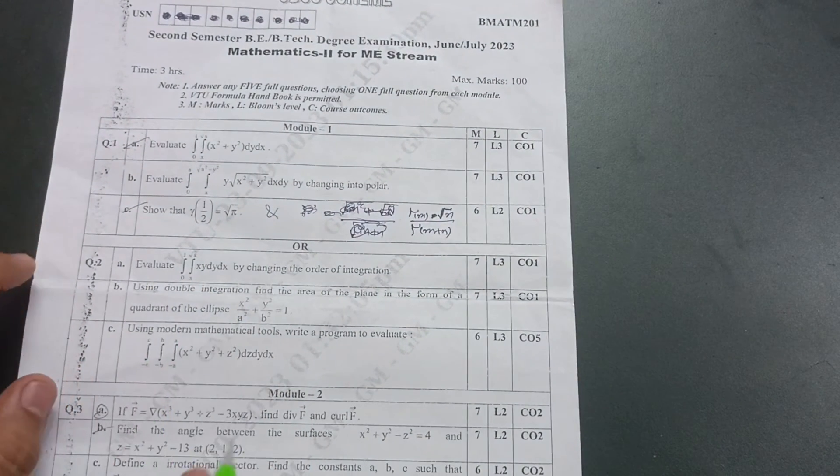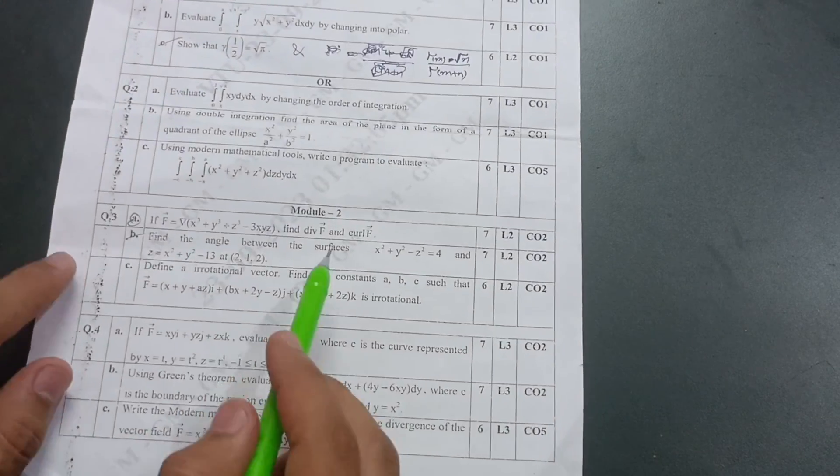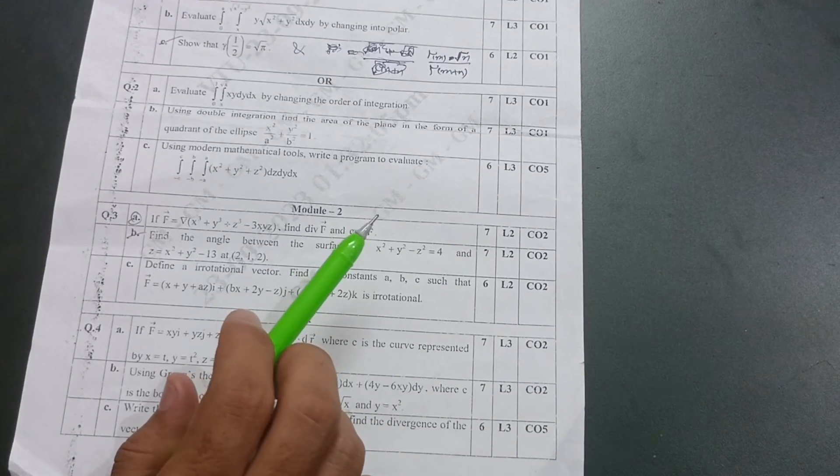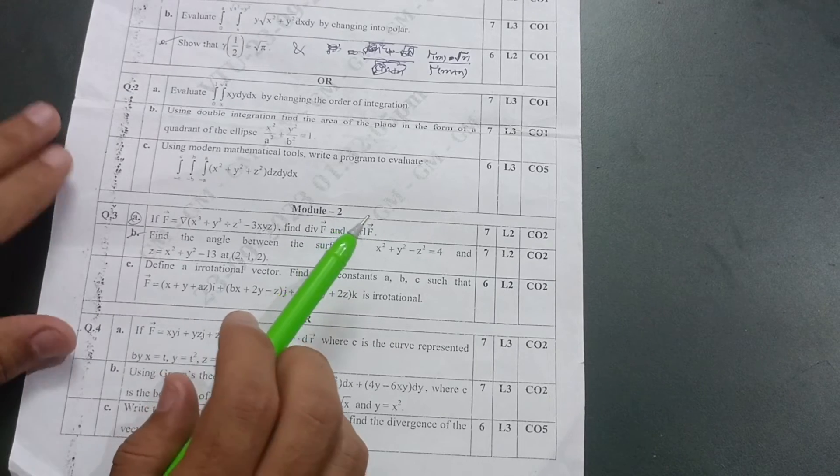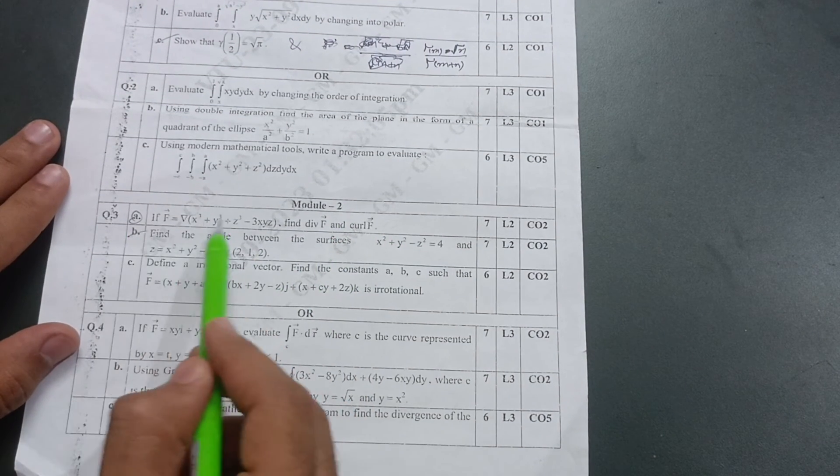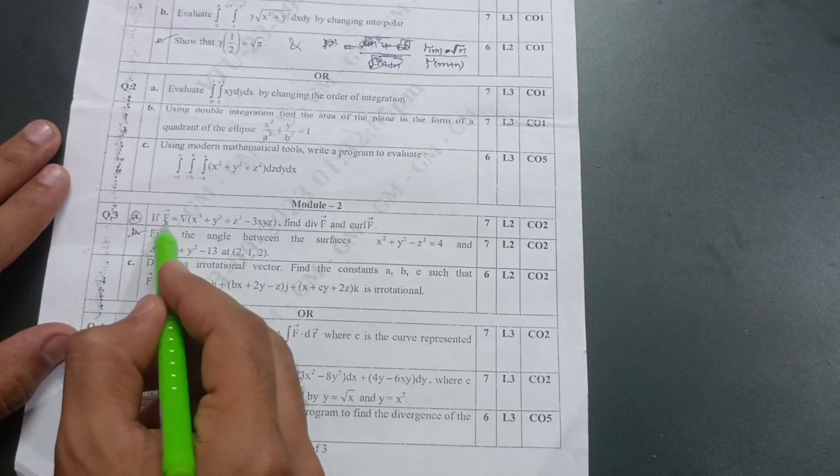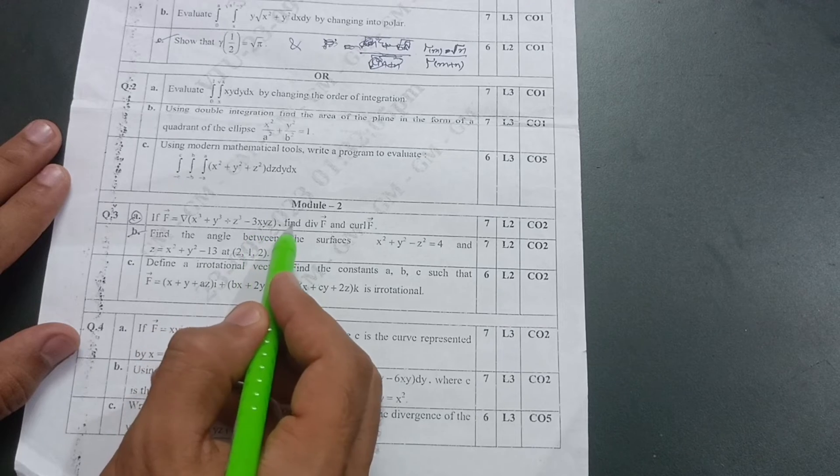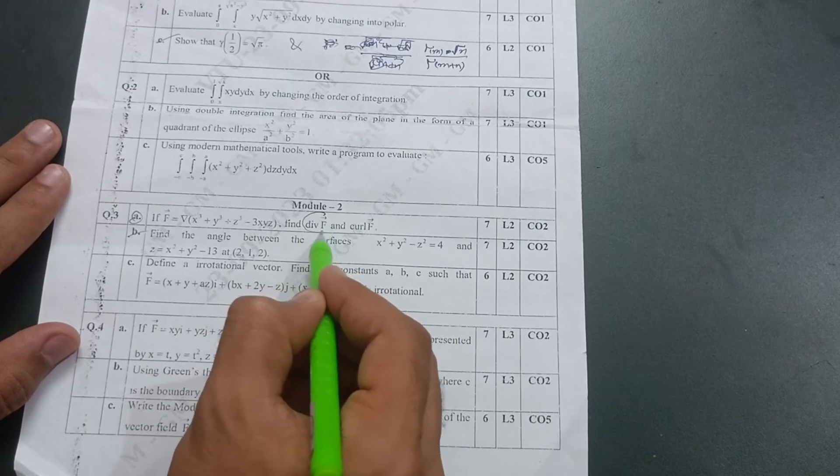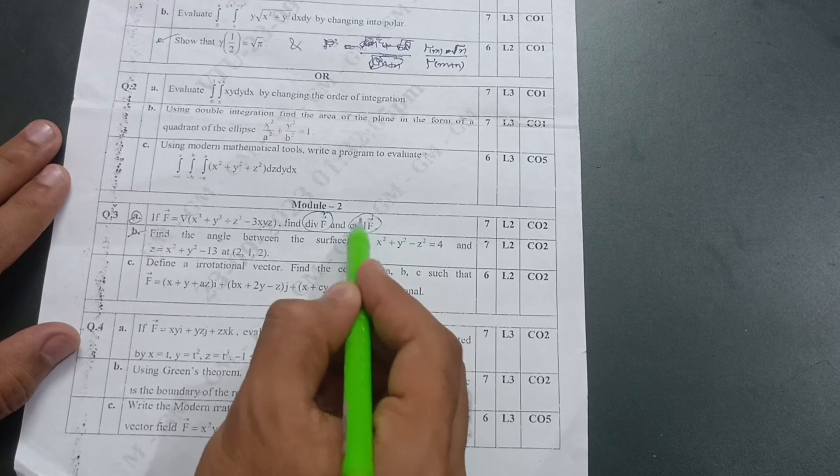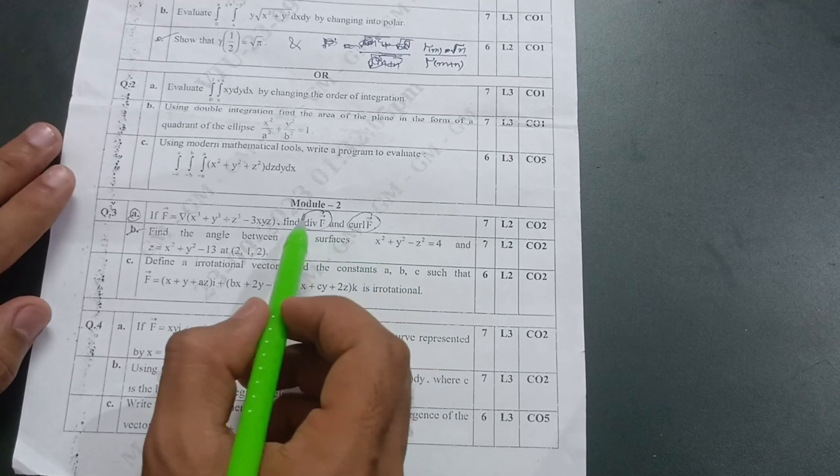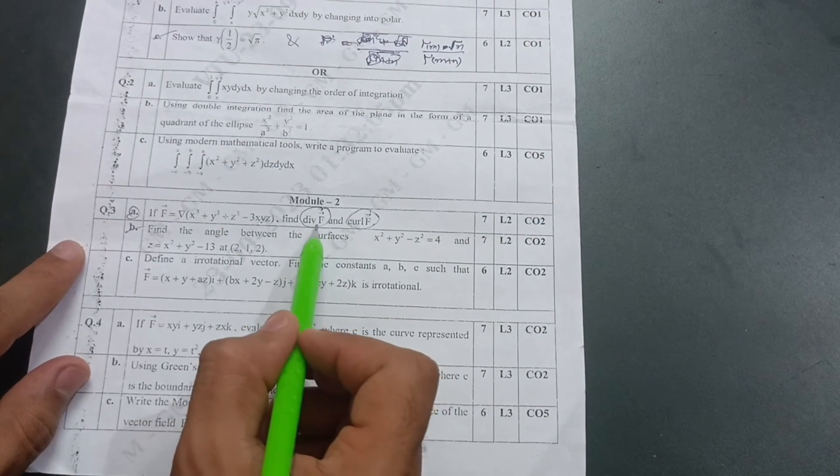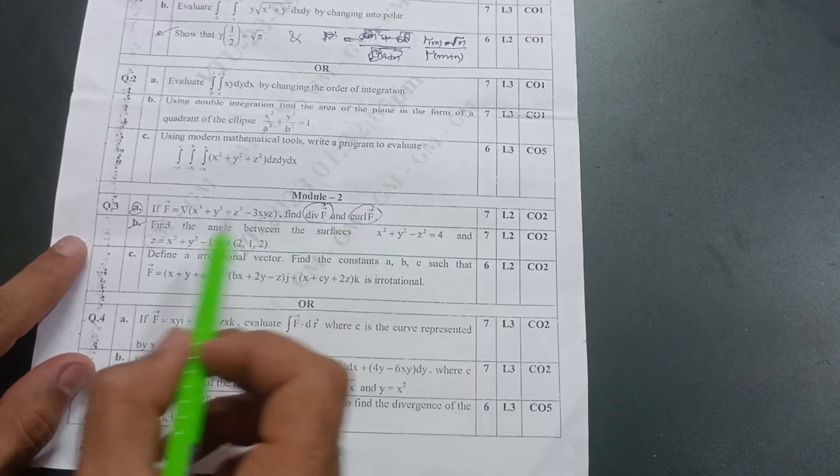Then module 2: I will share the notes link in the description box. Take two questions from module 2. If F vector is equal to curl of (x³ + y³ + z³ - 3xyz), find divergence of F and curl of F. These two concepts, divergence of F vector and curl of F vector, are very simple ones. You can easily solve these questions, so first one: take divergence of F and curl of F.